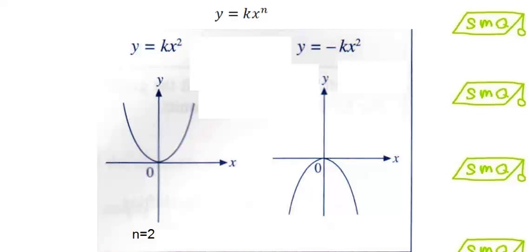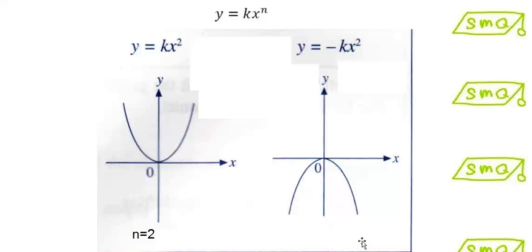The graph of y equals kx squared where n is equal to 2 is a parabolic curve which passes through the origin. For y equals kx squared where k is positive, the curve resembles a smiley face, while for y equals negative kx squared where the coefficient of x squared is negative, the graph shows a sad face.